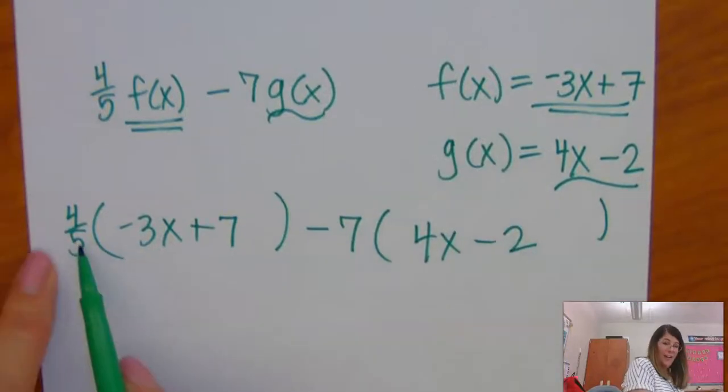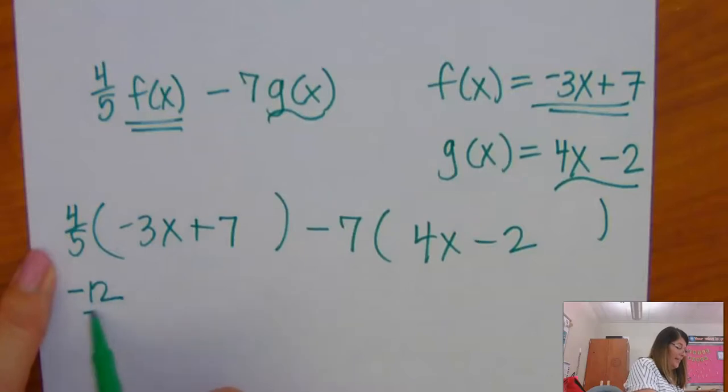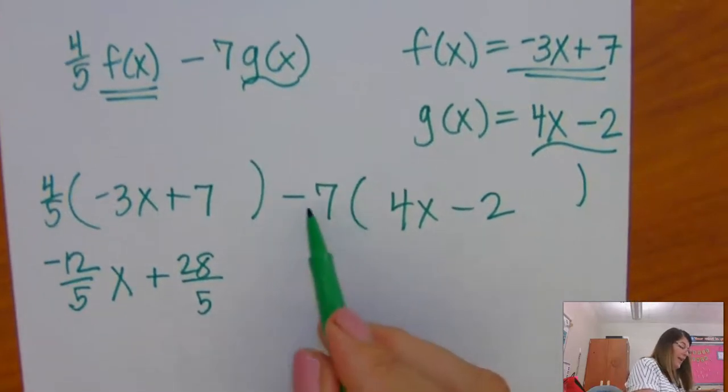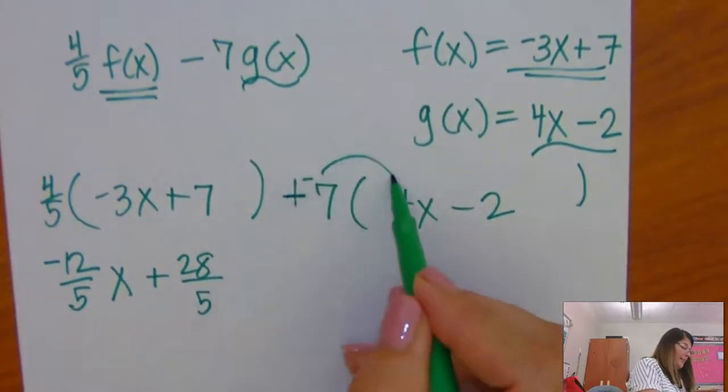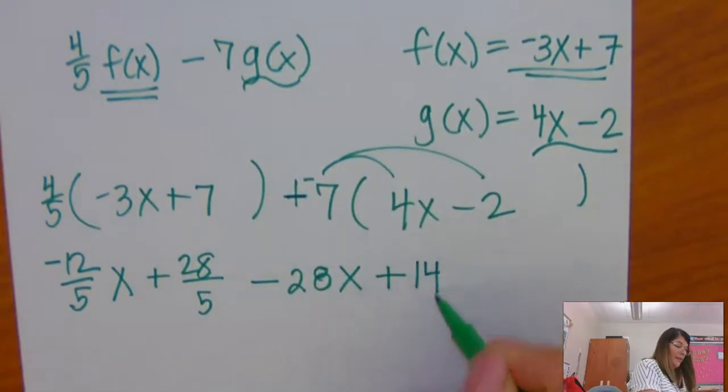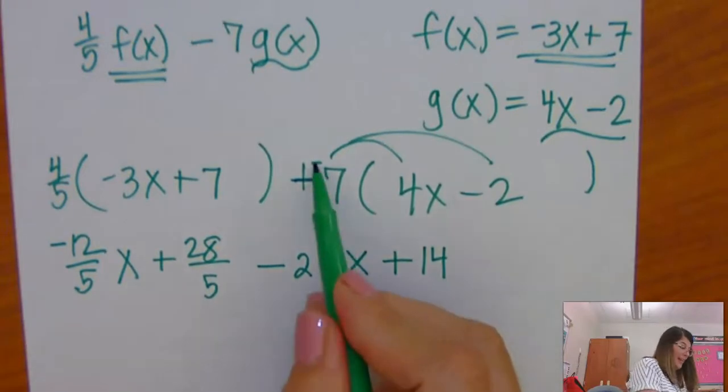Now, I have a fraction to deal with. 4/5 times -3 is -12/5 x plus 28/5. Now, you can think of this as plus negative 7 that you're distributing. That becomes minus 28x and plus 14 because the negative and the negative.